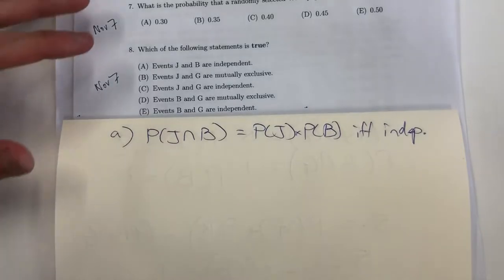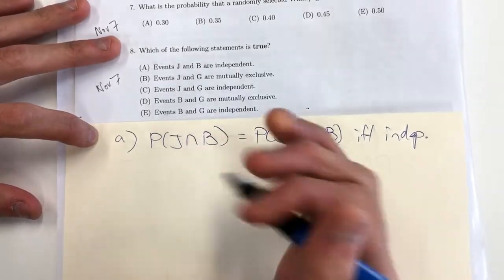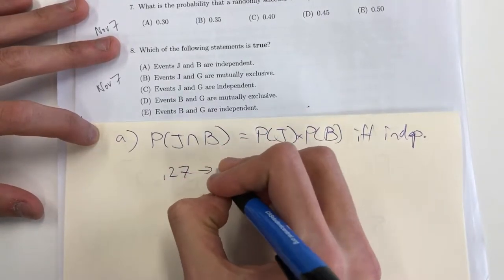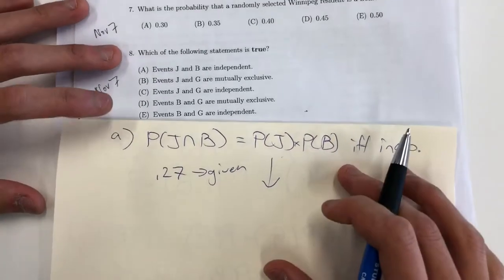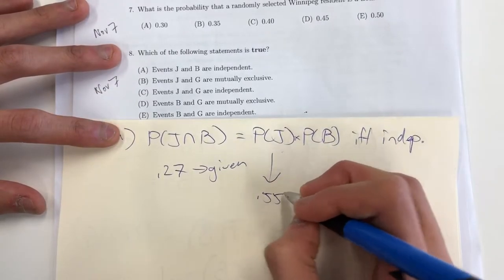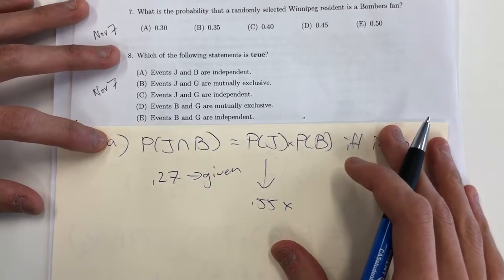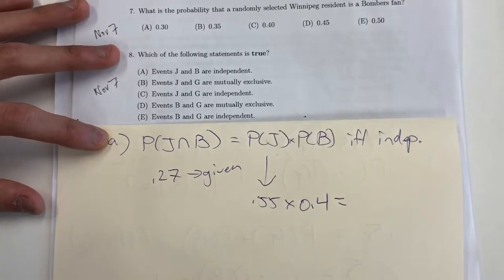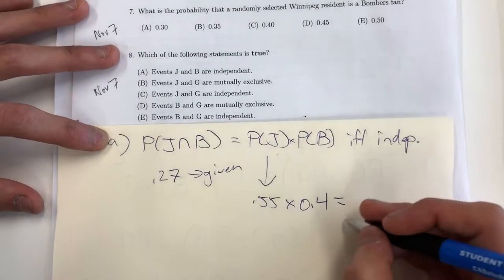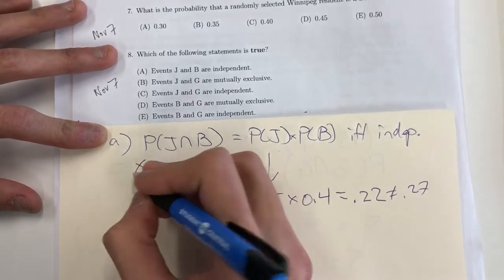So in the question we're given, the probability that they're a Jets and a Bomber's fan is 27%, 0.27. The probability that they're a Jets fan is 55%, multiplied by the probability that they're a Bomber's fan, which we calculated in the previous question to be 0.4. Taking the product of each other, we get 22%, which does not equal 0.27. So letter A is false.